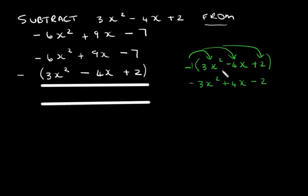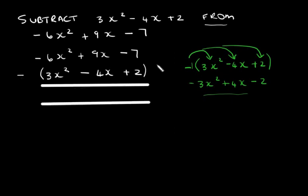So negative one times 3x squared gives negative 3x squared. Negative one times negative 4x gives positive 4x. And negative one times positive 2 gives negative 2. We have a negative in front of this expression, so all the signs change: that becomes negative, that becomes positive, and that becomes negative.